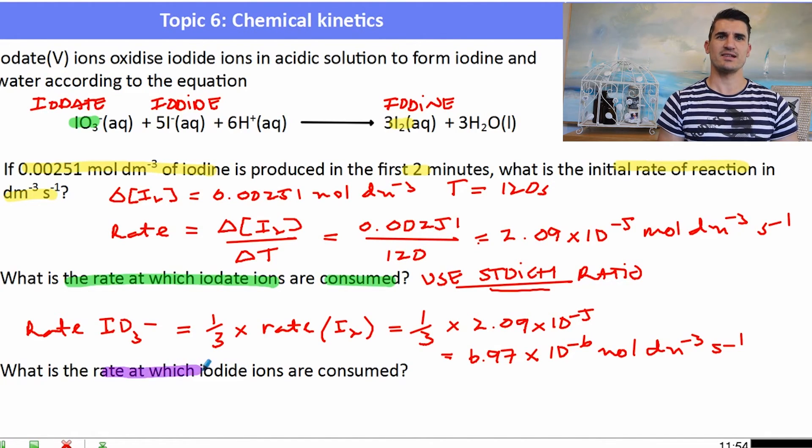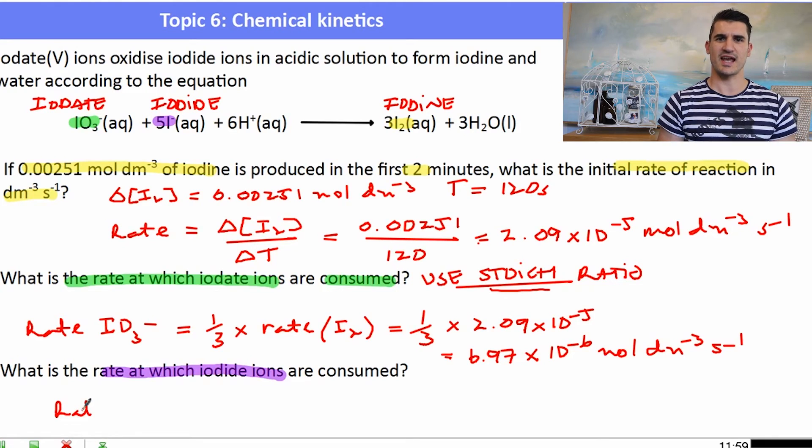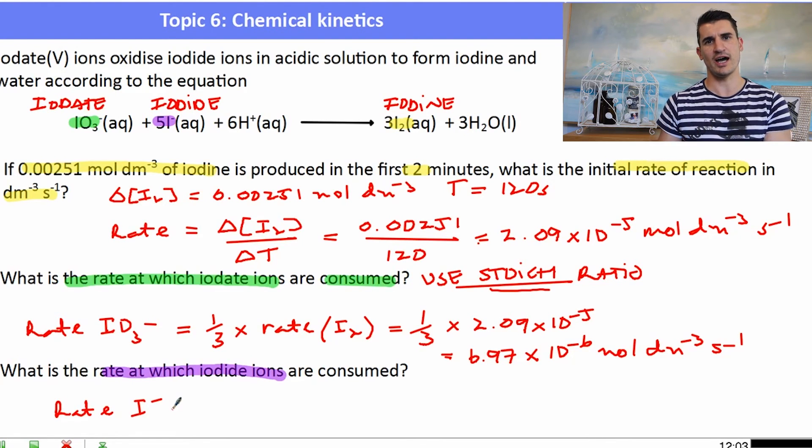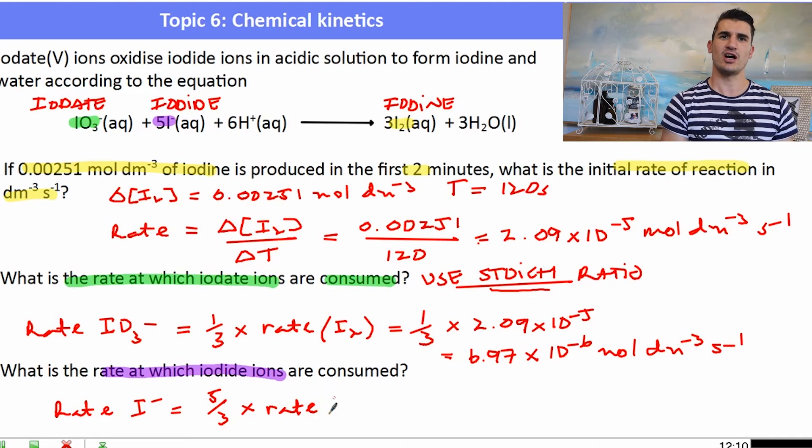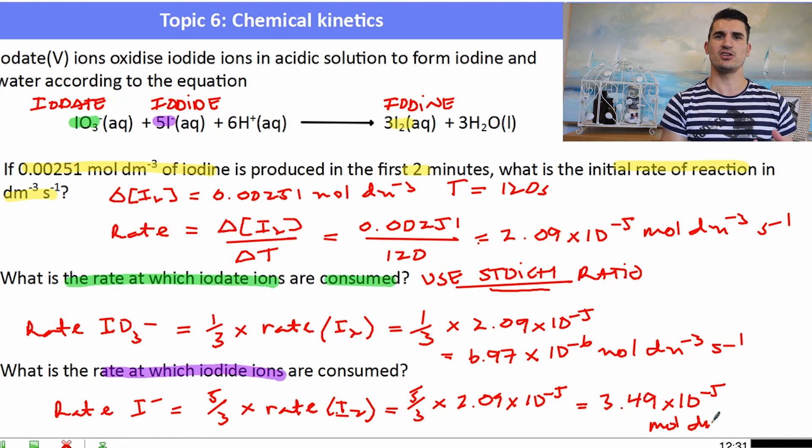The final one is what is the rate at which iodide ions are consumed? Now iodide is I-. So we want to apply the same idea here. Use the ratio between the iodine and the iodide. This time the ratio is 5 to 3. So it's 5 over 3 times the rate of I2. Now I've kept using I2 here because that was the one they asked me to find first and I kept the number in my calculator so I didn't have any rounding errors and I would only round at the very end. So working that out the rate of I- consumption would be 3.49 times 10 to the minus 5 and the units will be the same. Mole per decimetre cubed per second.